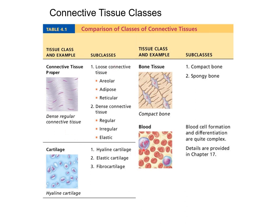Let's start with connective tissue proper. It could be loose or it could be dense. There are three types of loose and three types of dense. The loose types are areolar, adipose, and reticular. The dense types are regular, irregular, and elastic.